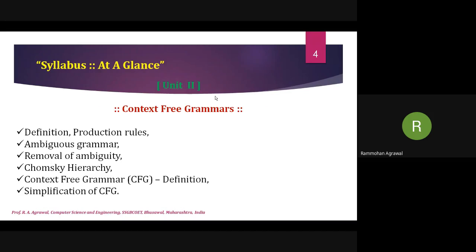In Unit 2, based on the foundation of automation, we will study context-free grammar — what it is, how it is useful, what the production rules are, how to write a production, what ambiguous grammar is, how to remove ambiguity, and the Chomsky hierarchy which produces four levels of grammar. Unit 2 covers how to create production rules, check ambiguous grammar, remove it, and understand derivation trees, syntax trees, parse trees, and grammar simplification. Unit 2 is very simple.